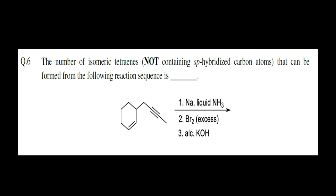The question is: the number of isomeric tetraenes that can be formed from the following reaction sequence. We are given a molecule with a double bond and a triple bond, and then three reaction steps, and we are asked to find the number of isomeric products.